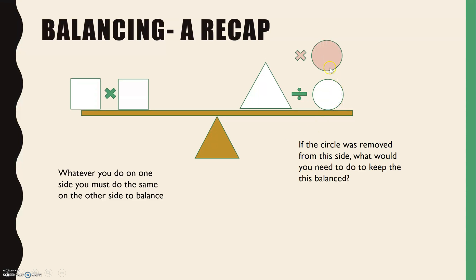So hopefully you've said you need to multiply, and then again to keep it balanced, need to multiply on the other side. So those two sides will cancel out and we'll lose that circle, but we'll gain a times circle or multiply by a circle on the other side.